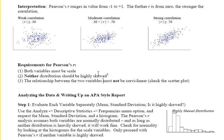Neither distribution should be highly skewed. Pearson's R expects that distributions are normally distributed, and if they're highly skewed, that violates that assumption. And number three, the relationship between the two variables must not be curvilinear. I'll go over that in more detail in a moment.